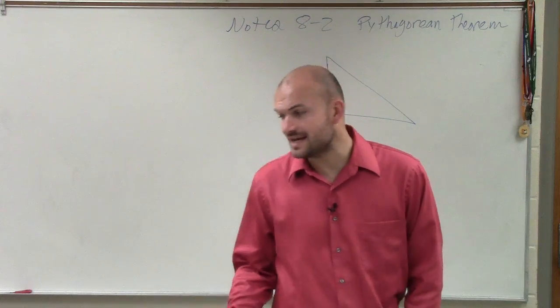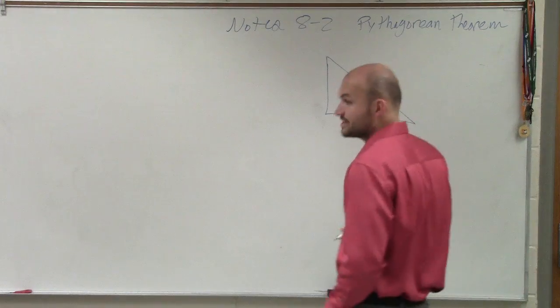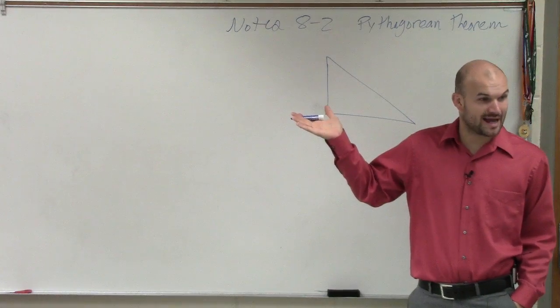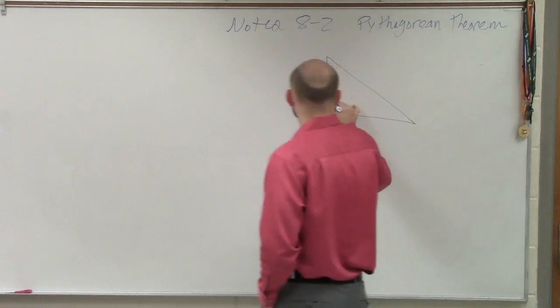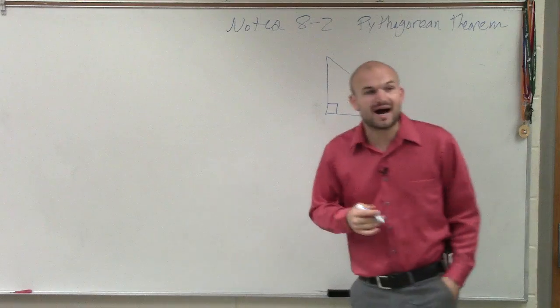Now, when investigating right triangles, we know that's a right triangle. Remember we talked about right angles, or 90 degree angles. So those right angles, those 90 degrees, have that little box.